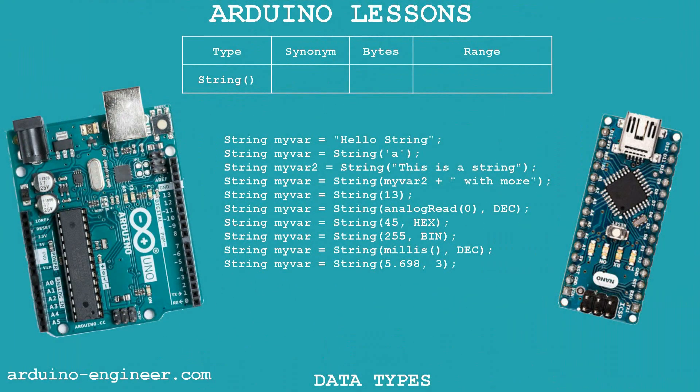When declaring the string type, we use a special class to work with string data. It allows you to work with long texts, limited only by the memory size of a particular controller. The text is assigned to the variable in double quotes. The Arduino IDE also provides the String function, which converts the values of various types of variables and constants into a string. It is also interesting that the text here can be written even in Cyrillic.